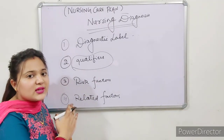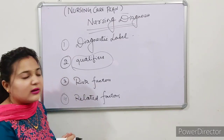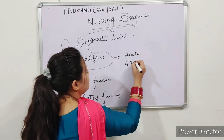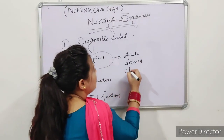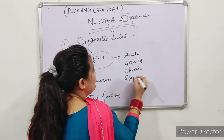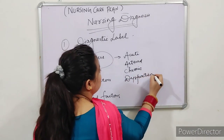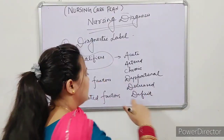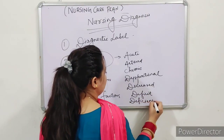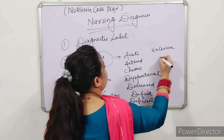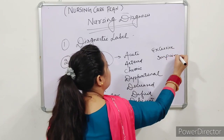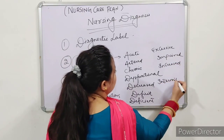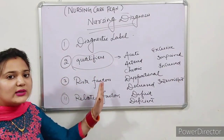Qualifiers are words that, when added to another word, provide an additional meaning. The qualifiers we use include: Acute, Altered, Chronic, Dysfunctional, Decreased, Deficit, Deficient, Excessive, Impaired, Increased, and Intermittent.